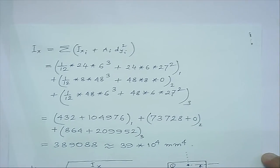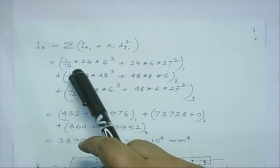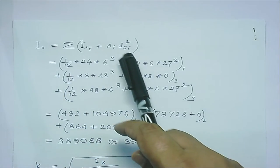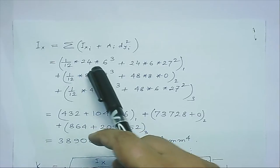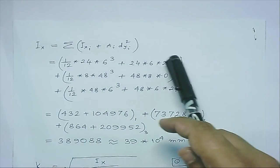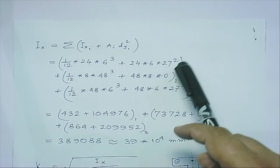We apply the parallel axis theorem. You see here that this is for the first area—what is the moment of inertia about its own centroidal axis, plus we have area multiplied by d² to transfer it to the x-axis.